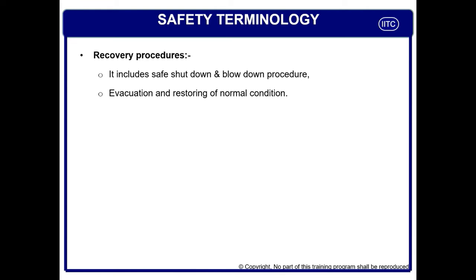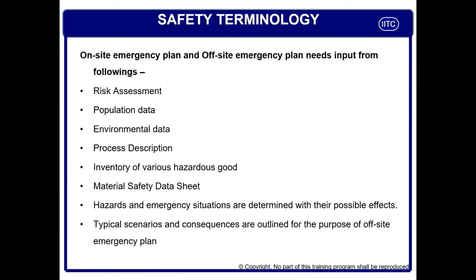There are some recovery procedures which include the safe shutdown and safe blowdown of your plant. Why safe shutdown? Because sometimes when you push the button to stop your operation, it has to be shut down safely. Otherwise, this can create a runaway reaction, over-pressurization, loss of primary containment, and can lead to major fire, major explosion, and toxic emission. This has to be clearly identified and practiced so that there is no further damage in case of any accident.